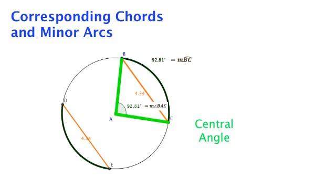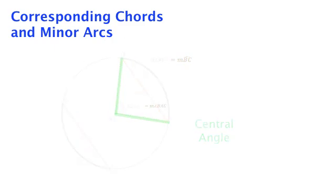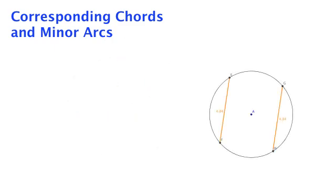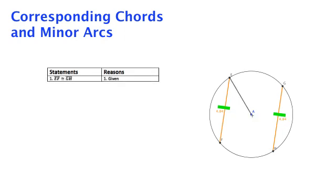Now that we have those definitions out of the way, let's begin our proof. We are going to start with a circle with two congruent chords. Then we are going to construct the segments that form the corresponding central angles.